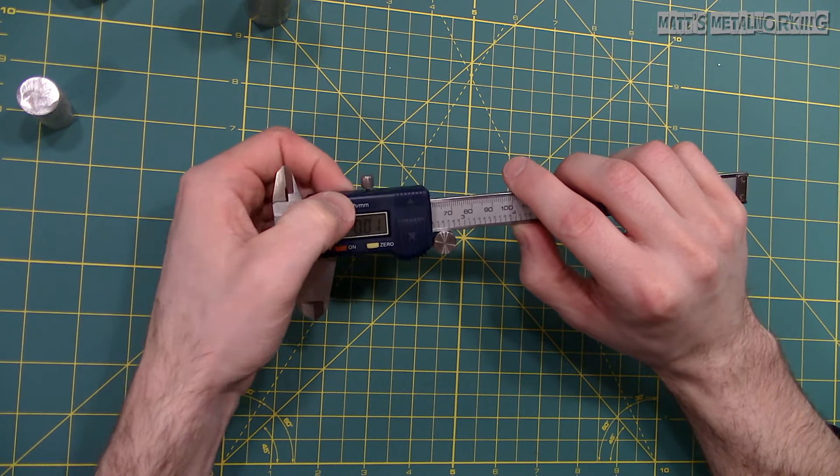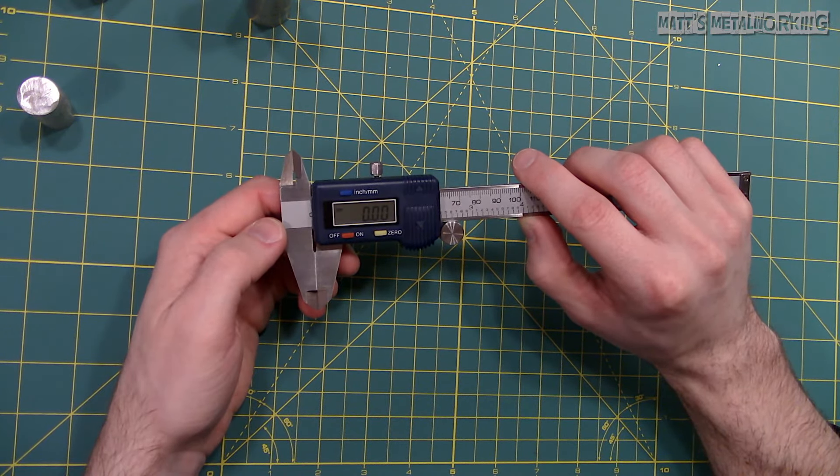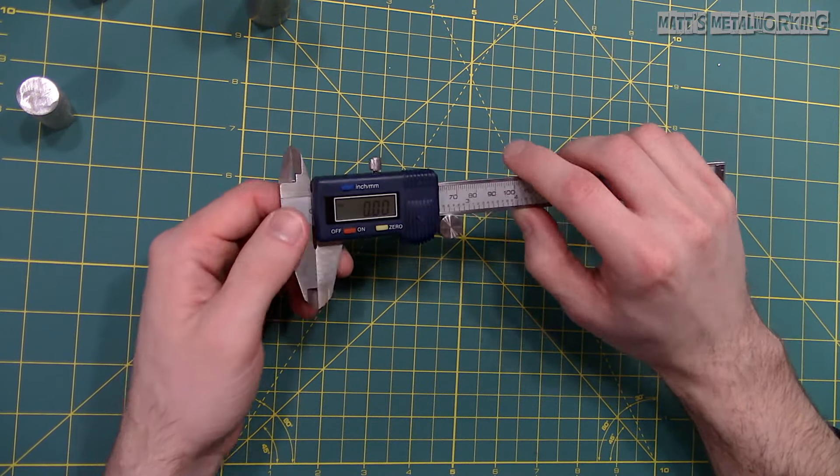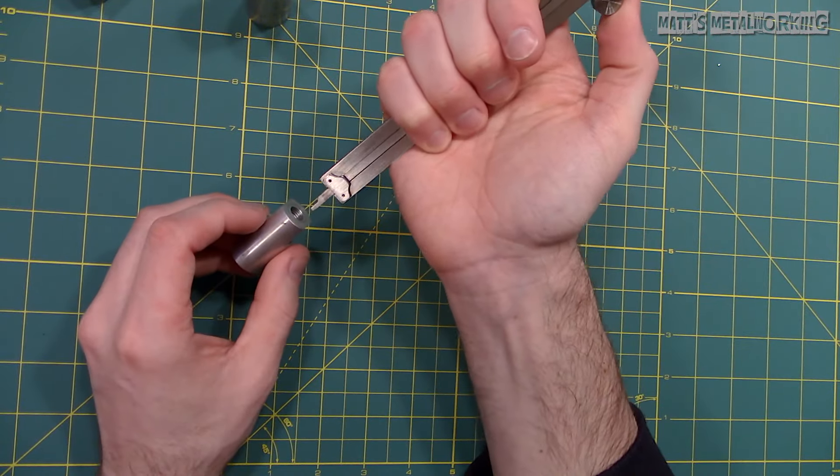Now switching over to metric this can be done very easily with the press of a button. Again we need to close the caliper and make sure the readout is zeroed using the depth probe this time to measure the depth of the threaded hole.